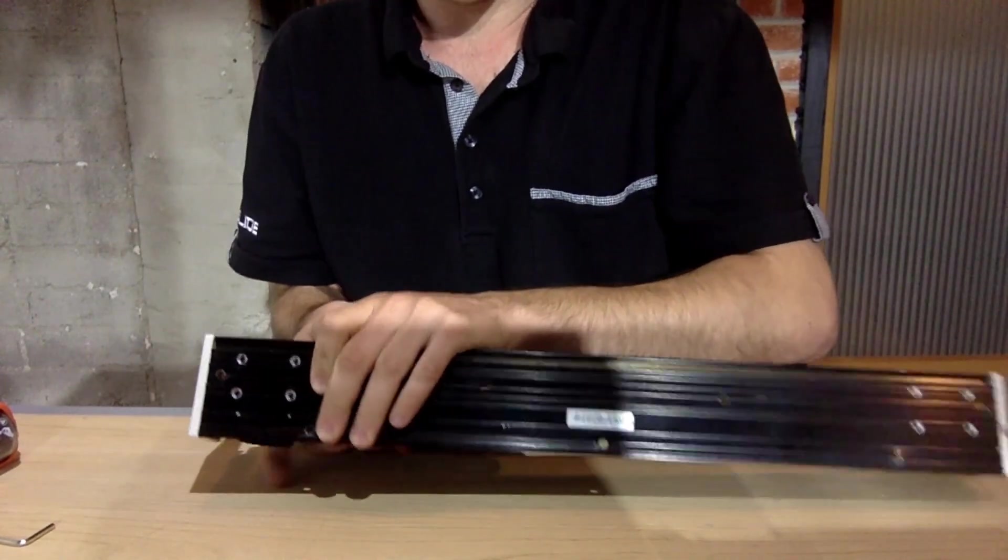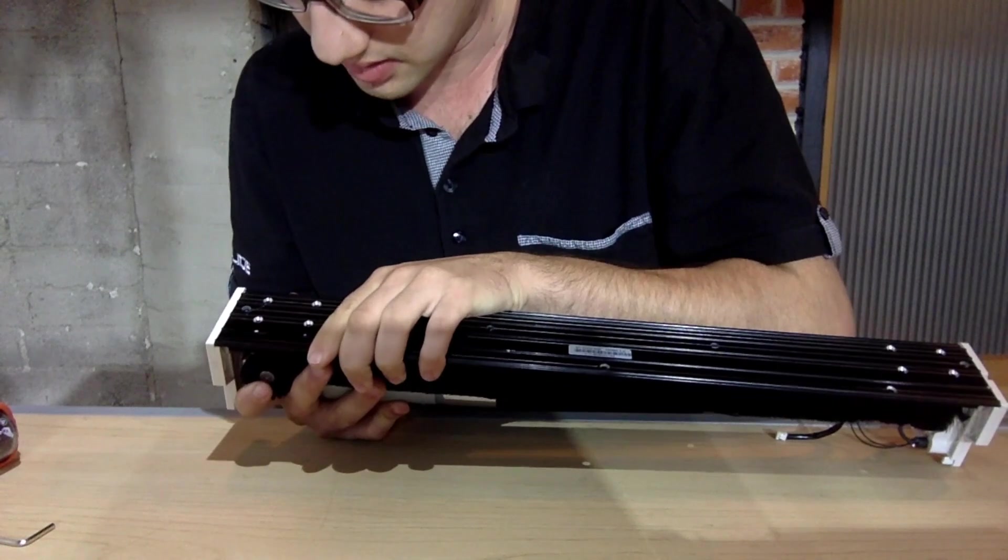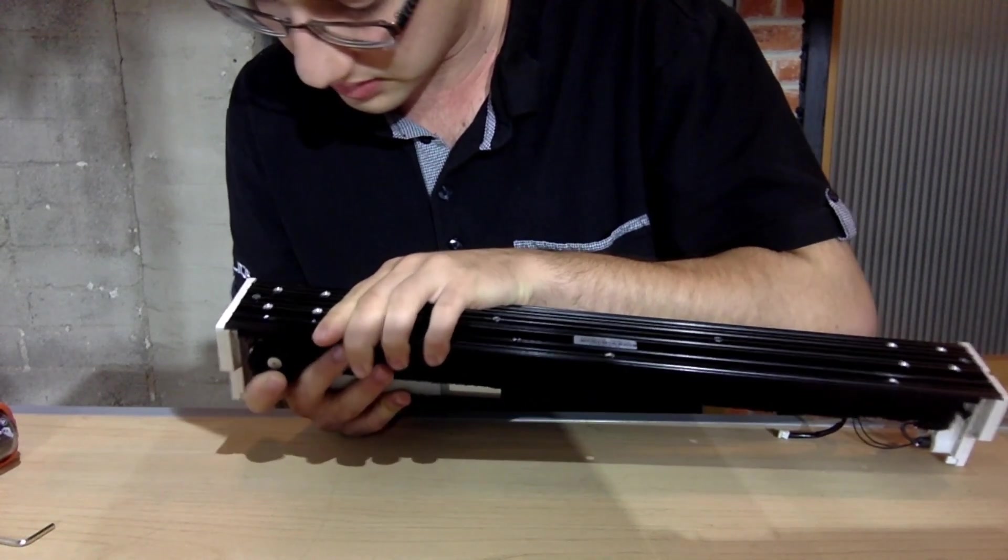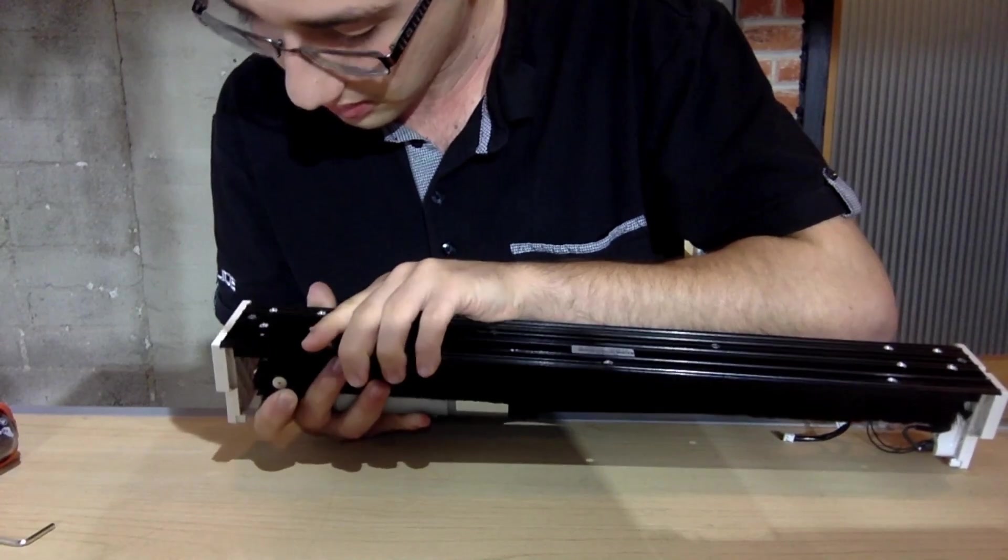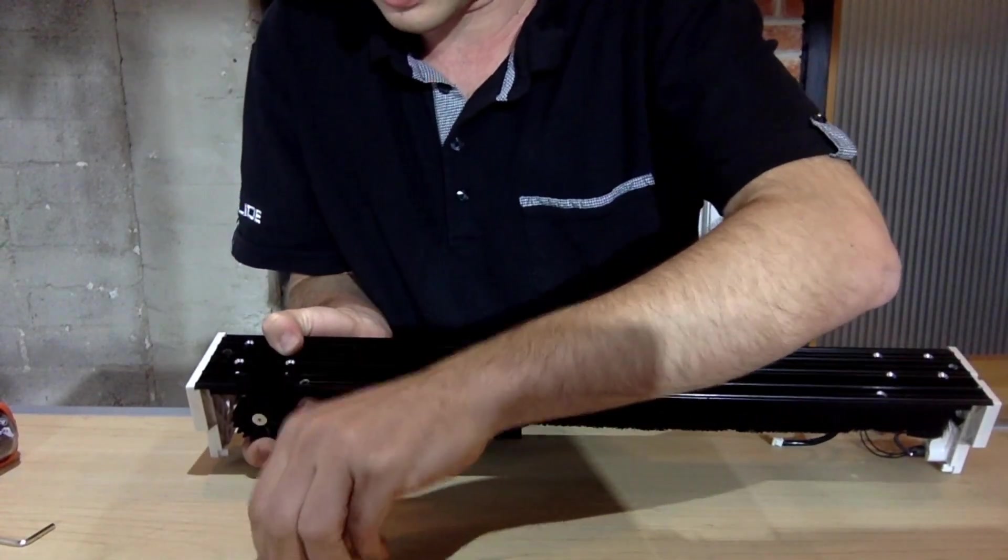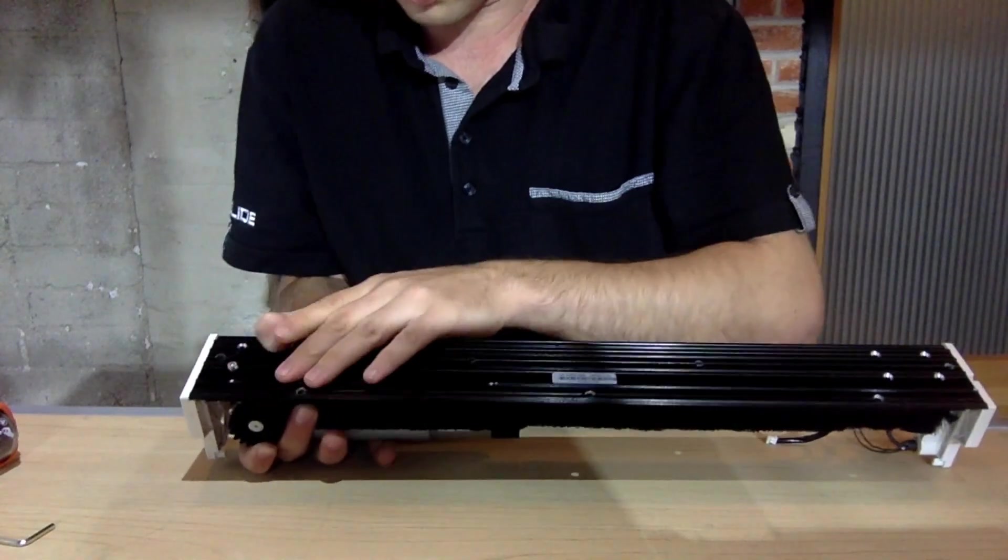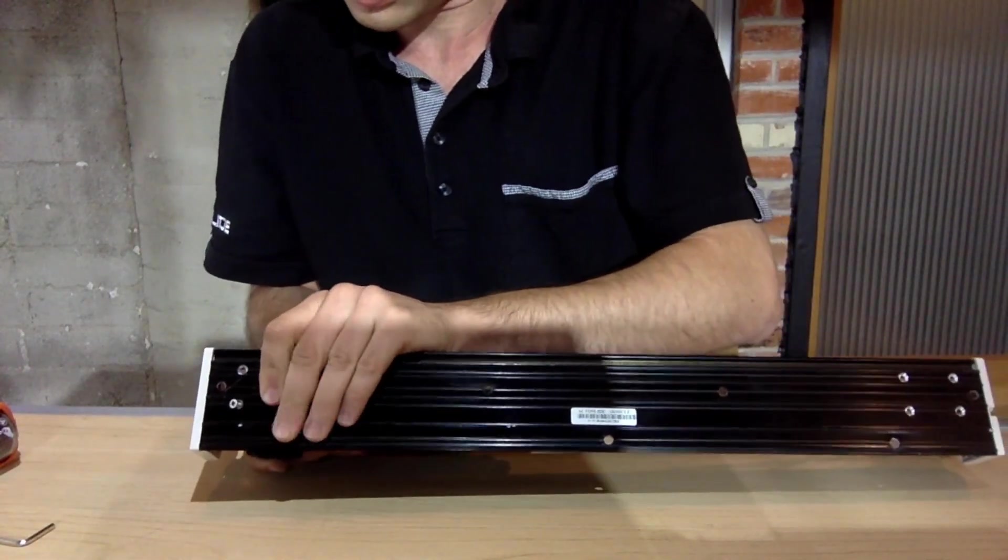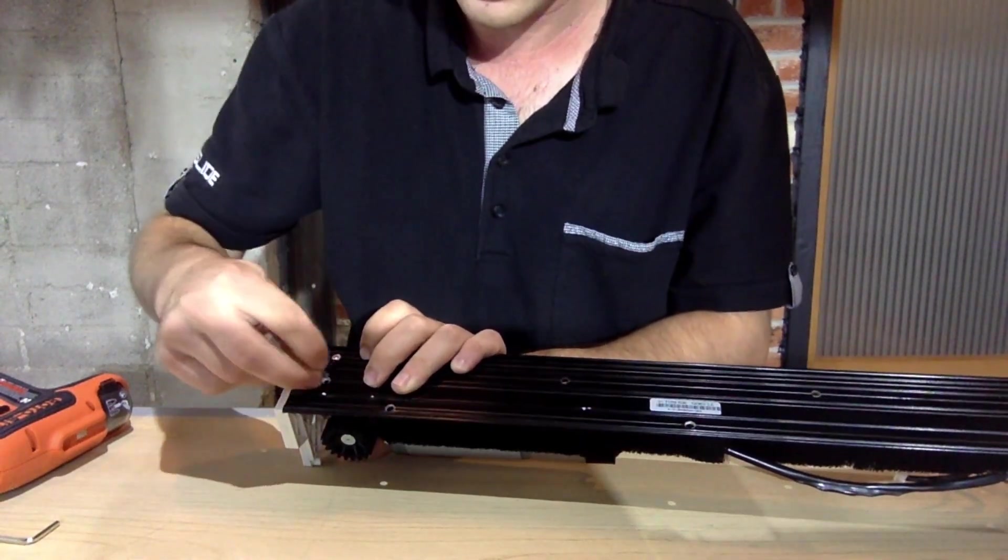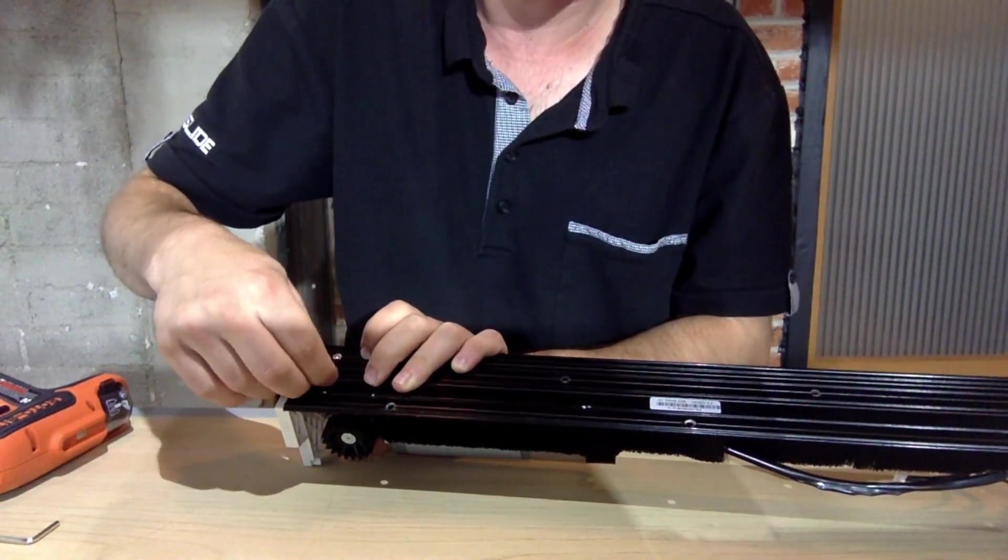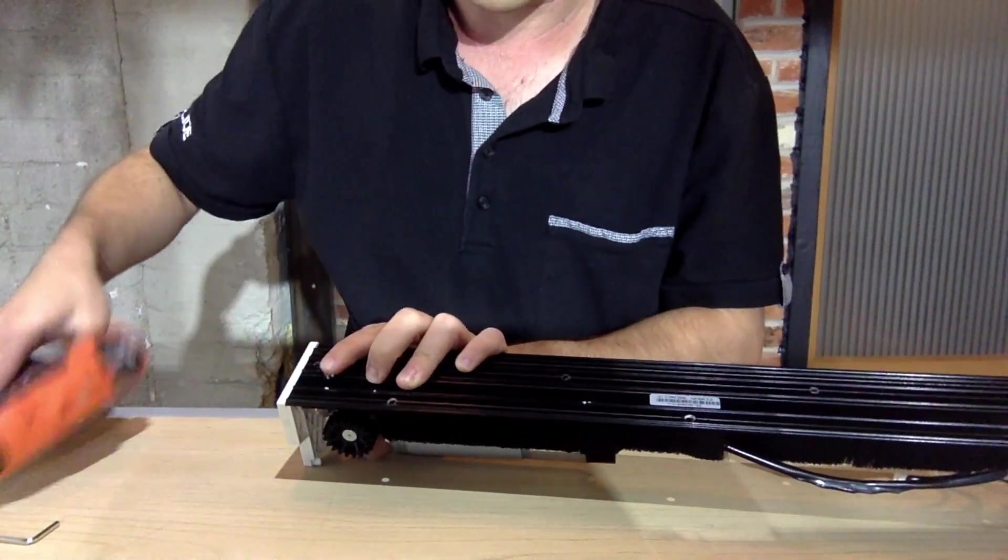From here, you look down the holes where the screws fit to hold the motor to the unit itself. I'm just going to align the screw holes and screw the screws back in to hold the motor. Here's one. Please note, when you're screwing these screws back in, do be careful, because the last thing you want is the screw heads to get stripped.